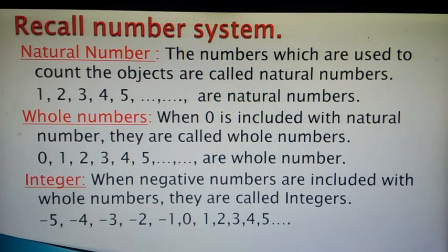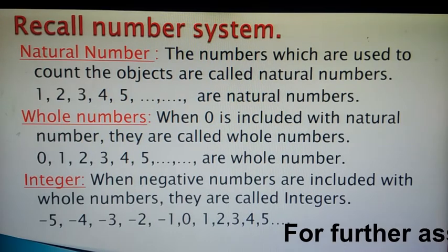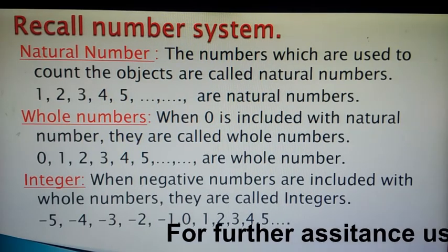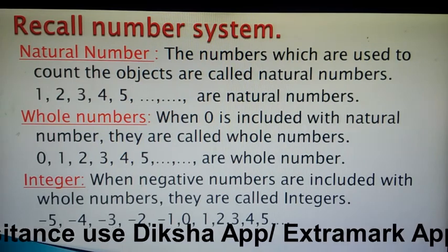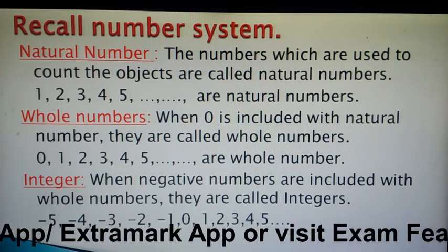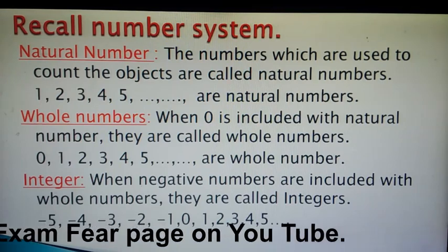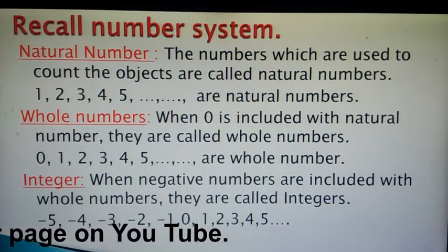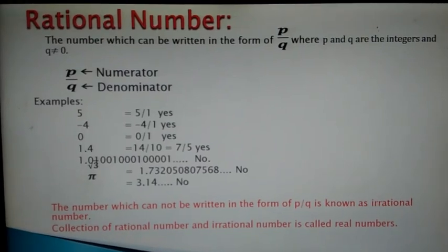Minus 1 is a negative number. When negative numbers are included along with the whole numbers, they are called integers. Now it is much clearer — what are the natural numbers, what are the whole numbers, and what are the integers.